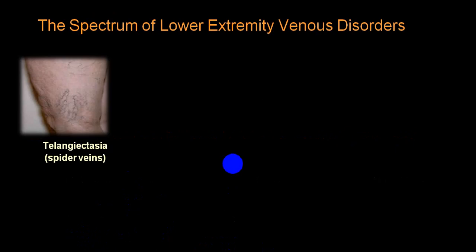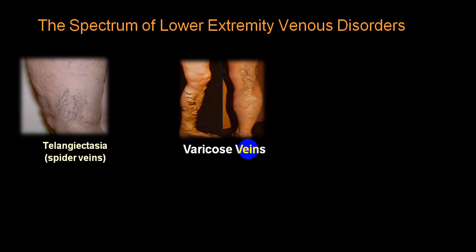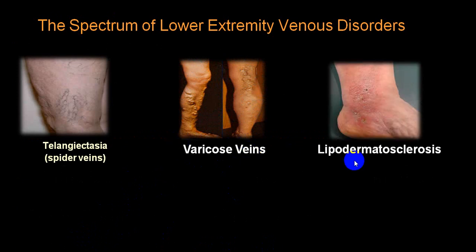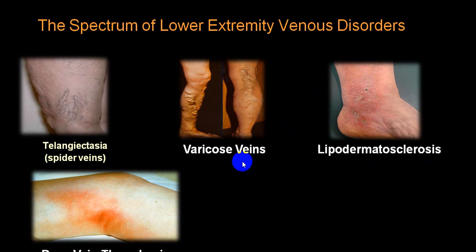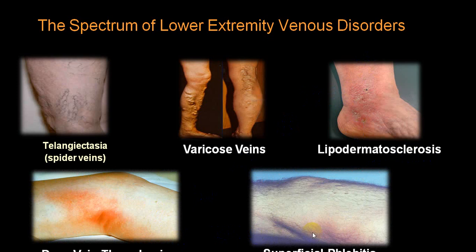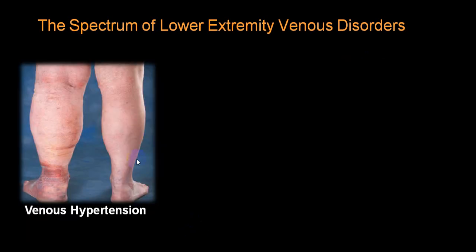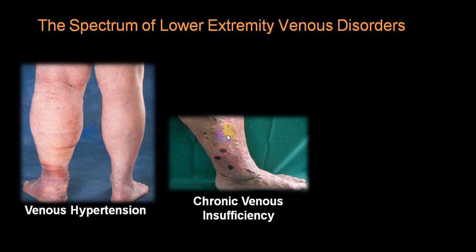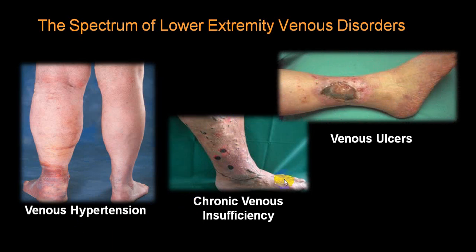The spectrum of venous disorders includes telangiectasia or spider veins, classical varicose vein, lipodermatosclerosis secondary to chronic venous insufficiency, deep vein thrombosis, and superficial phlebitis. With increased venous pressure — also labeled as venous hypertension — you start getting changes in the skin, and eventually venous ulceration.